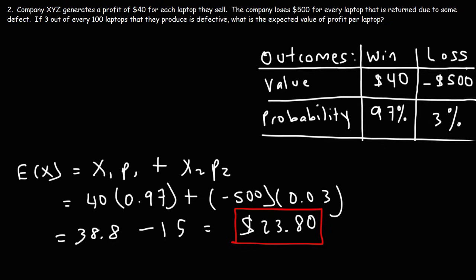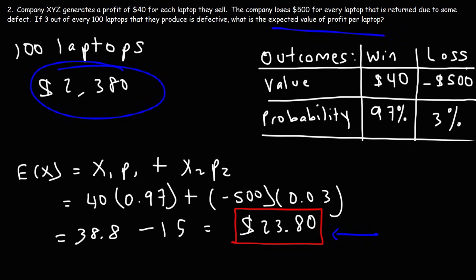So this means that for every laptop that they sell, the expected profit is $23.80. So if they were to sell 100 laptops, they can expect a profit of 23.80 times 100, or $2,380. But the answer that we're looking for in this video, the expected value of profit per one laptop, is $23.80. So now you know how to calculate the expected value in a variety of different situations. Thanks for watching.